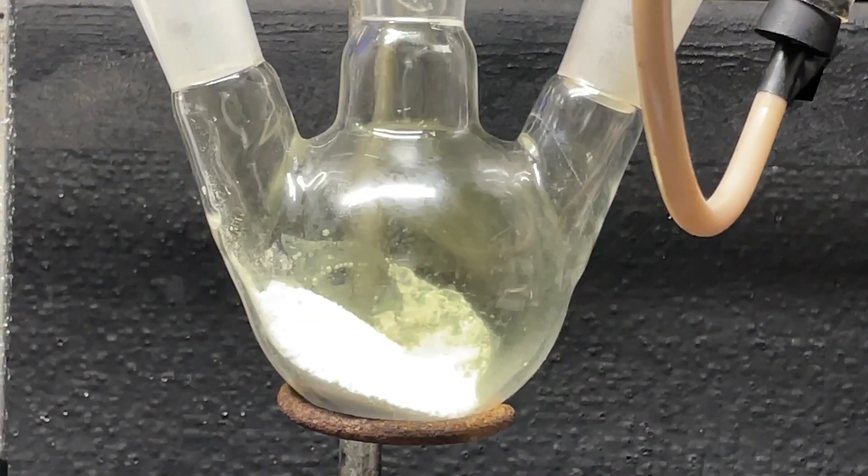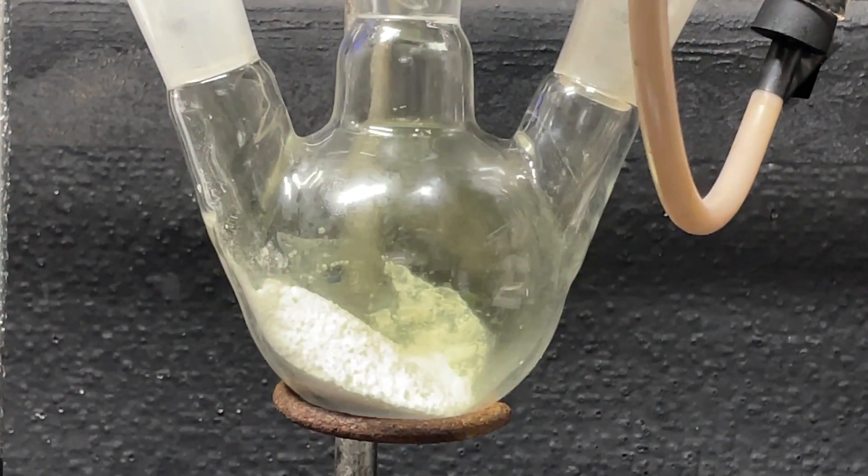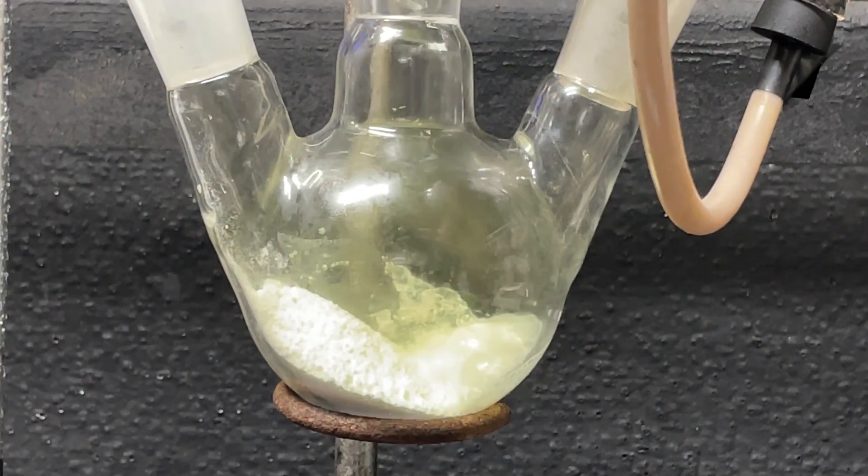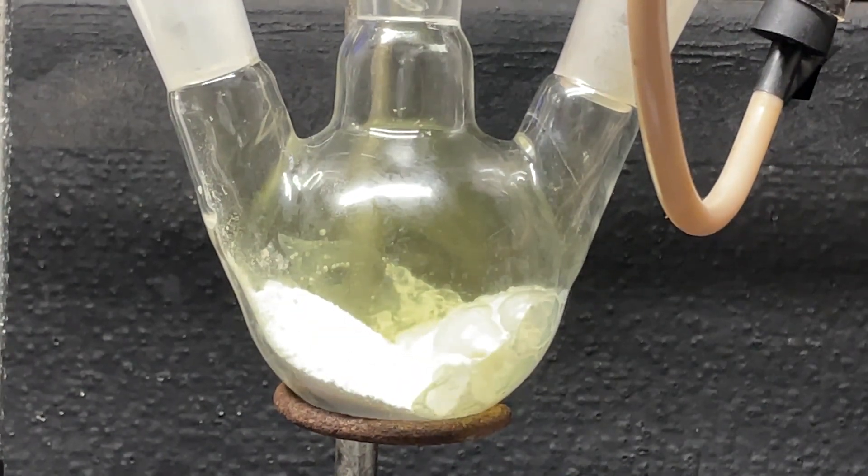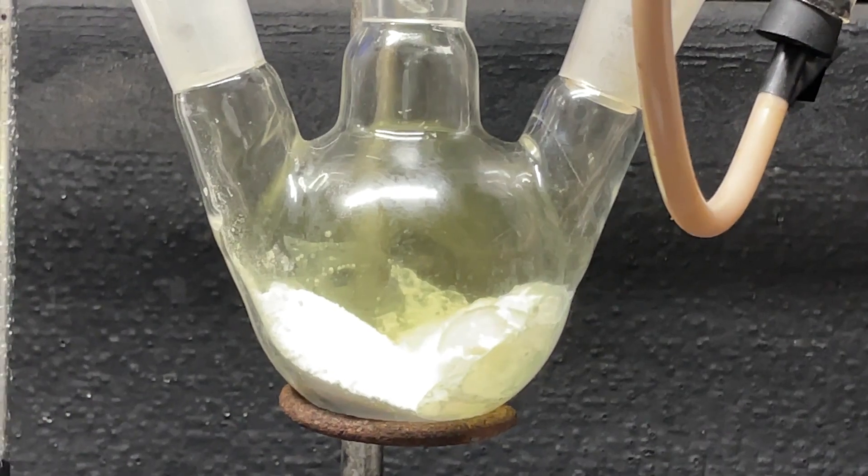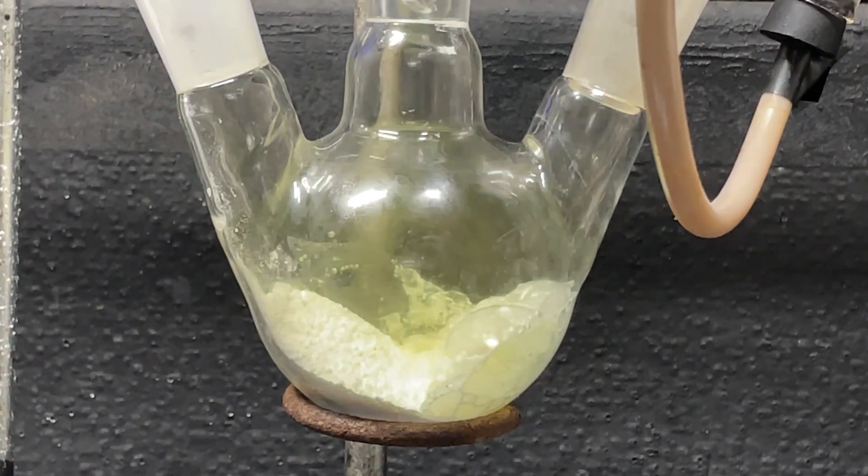Okay first thing I'm going to do is drip a small amount of HCl on our TCCA. As you can see it is producing chlorine gas immediately. And we'll add a little bit more.